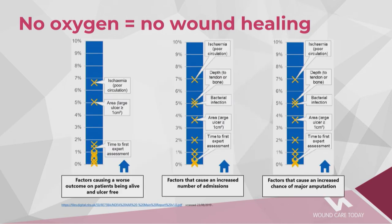A paper from Malaysia looked at transcutaneous oxygen levels on amputated toes — those with higher oxygen levels went on to healing, while those with poor oxygen levels either failed to heal or were very slow to heal. The National Diabetic Foot Audit similarly showed that ischemic wounds were causing problems and leading to amputations. Chronic wounds require more oxygen but often have a lower supply, and ischemic wounds are more likely to cause hospital admissions and major amputations.